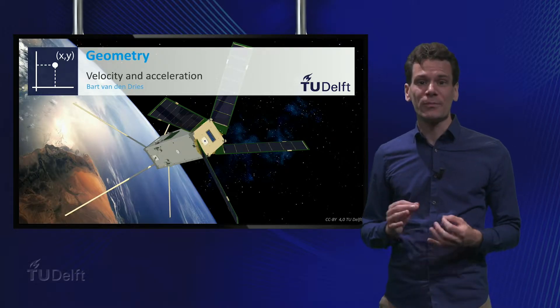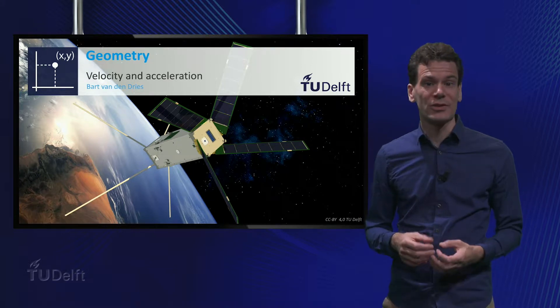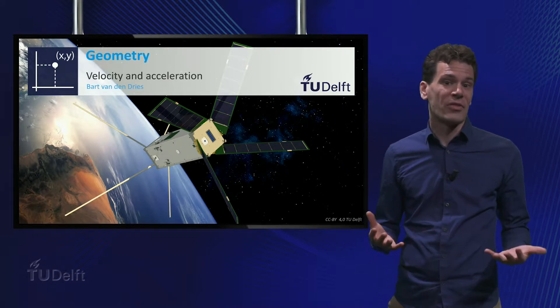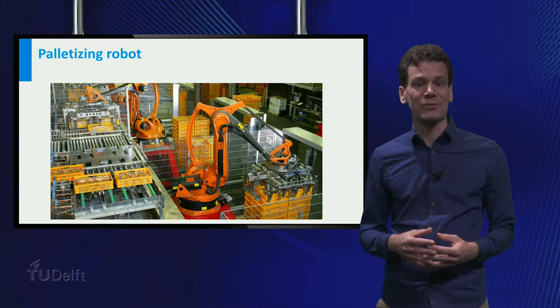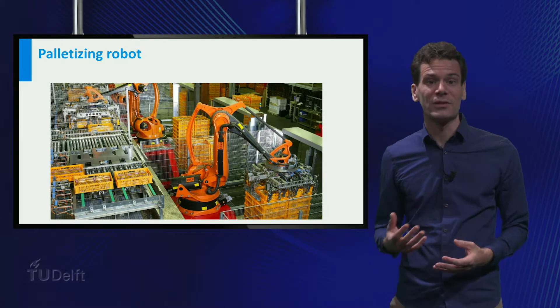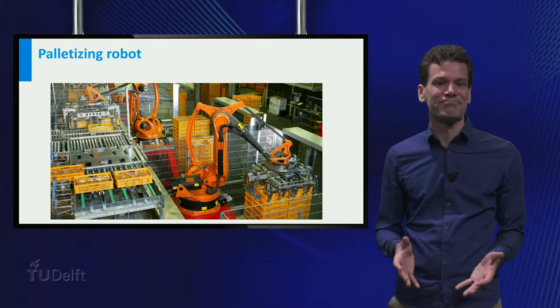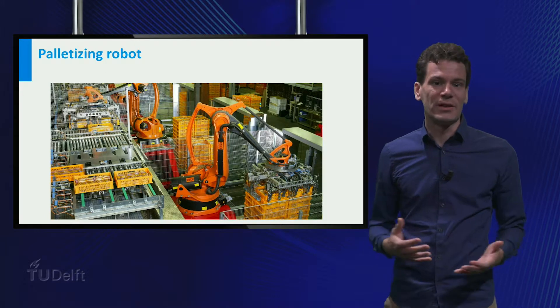Welcome! Nowadays, robots play a crucial role in factories and distribution centers. Think for example of so-called palletizers, automated robotic arms that stack boxes onto pallets. Nowadays these are very common in large companies.